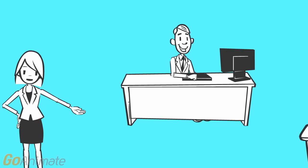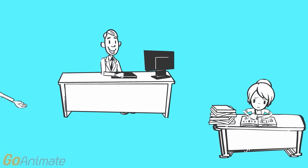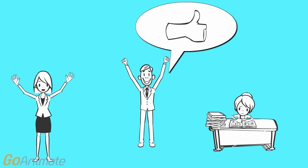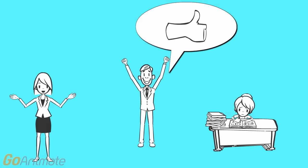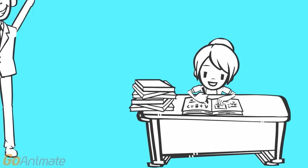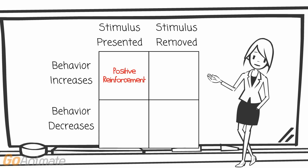For our first example, we have a student who is working diligently on her schoolwork. As a consequence, the teacher could show his appreciation for her hard work by providing positive feedback. In return, the student continues to work hard. In that example, we had a stimulus being presented, which caused behavior to increase. Therefore, we would call this positive reinforcement.